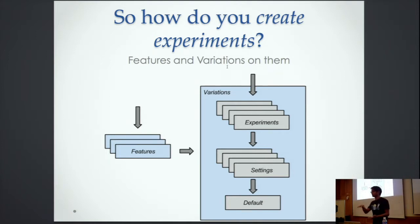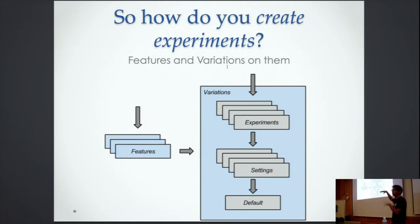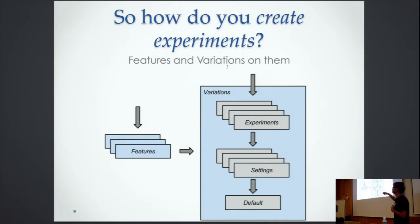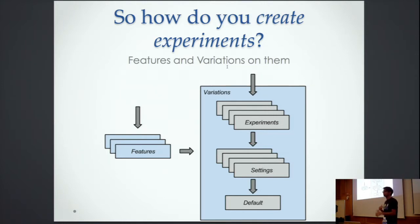The way it works is you run through all the features. You pick, say, homepage. You figure out if there's any experiment to run on it. Once you decide there is an experiment, you move on to the next feature. If you decide not to run any experiment, you go down to the settings level — if conditions match, you run that particular setting. If no experiment is eligible and no setting is eligible, you end up seeing the default, which is the base variation.